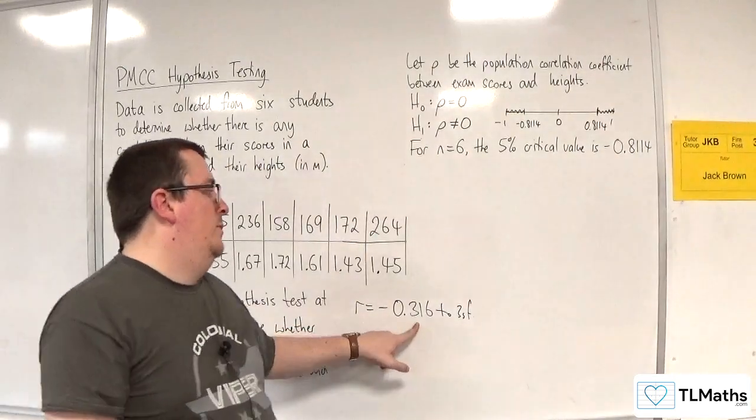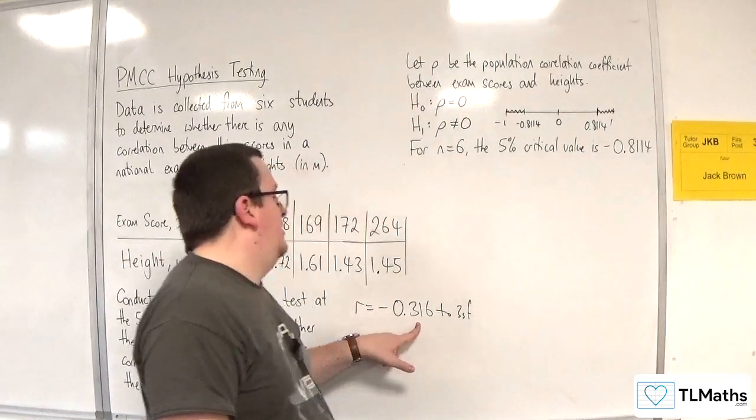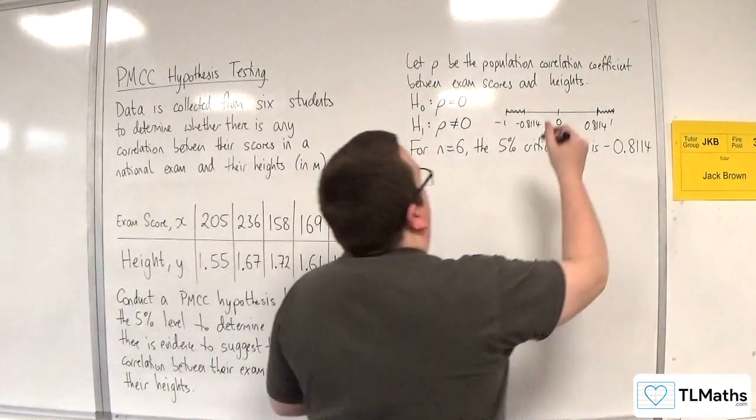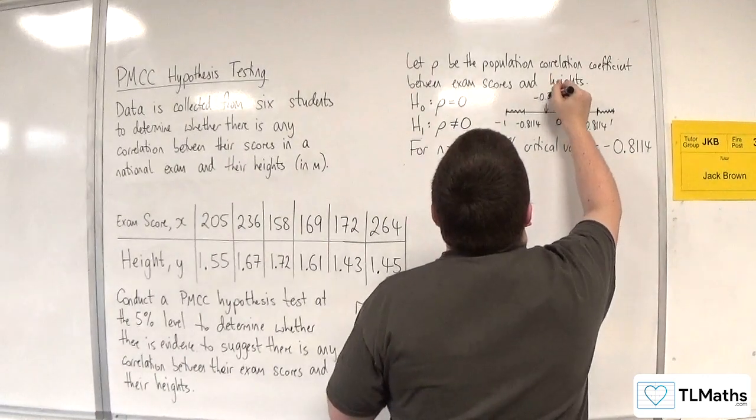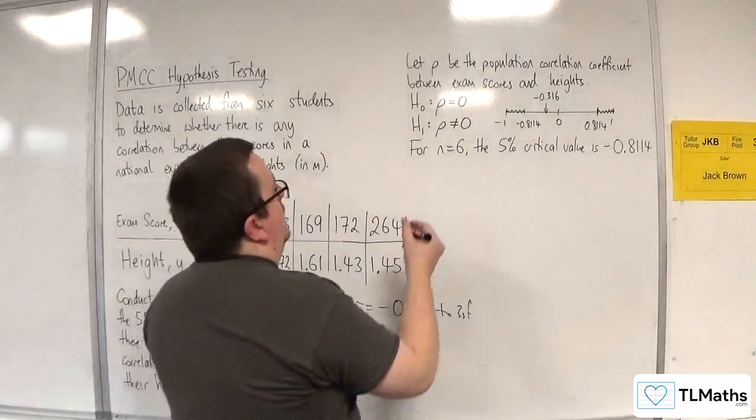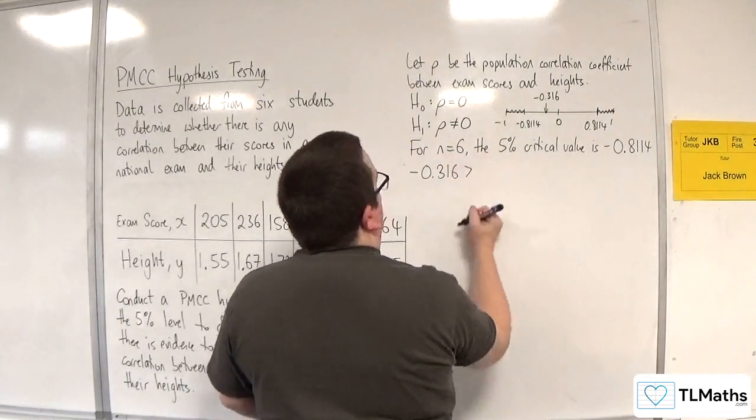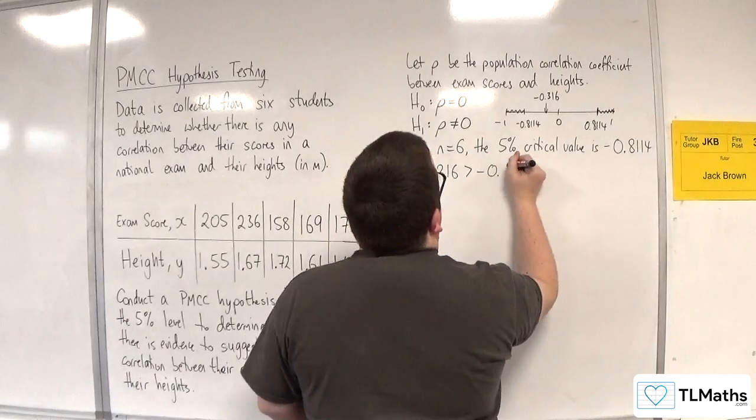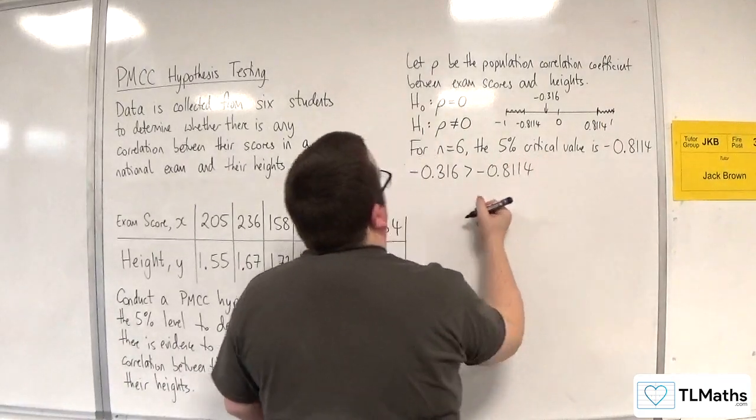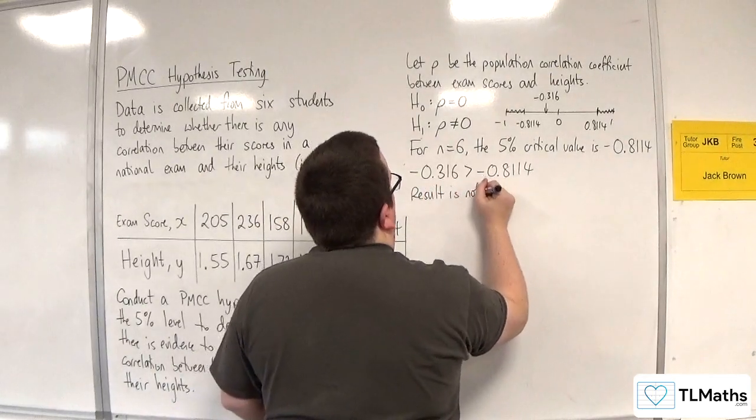But R value is R equals minus 0.316, so that's somewhere about here. Minus 0.316 is greater than minus 0.8114, so the result is not significant.